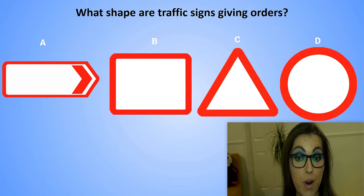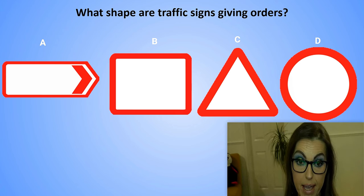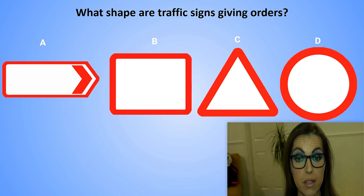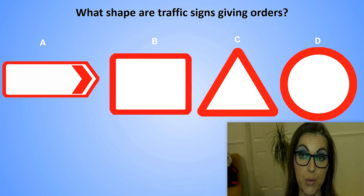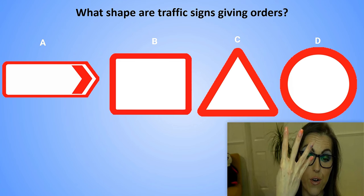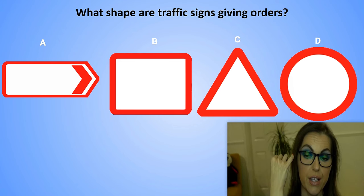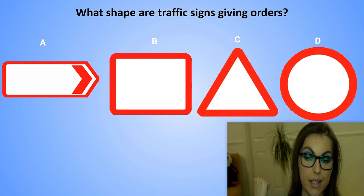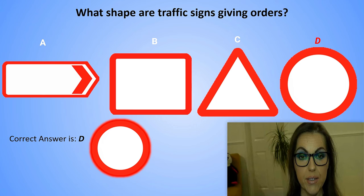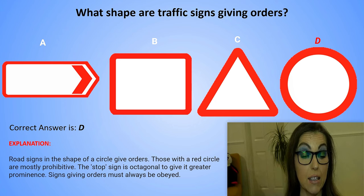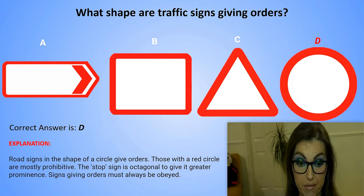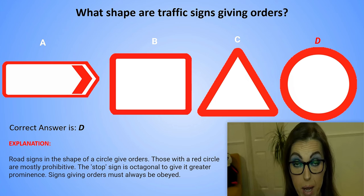What shape are the traffic signs giving orders? The correct answer is D. Explanation: Road signs in the shape of a circle give orders. Those with a red circle are mostly prohibitive. The stop sign is octagonal to give it greater prominence. Signs giving orders must always be obeyed.